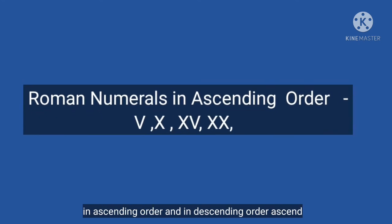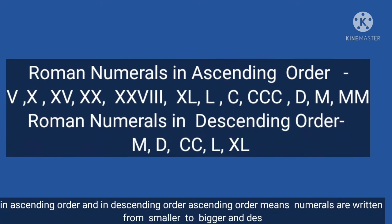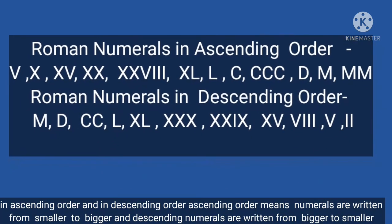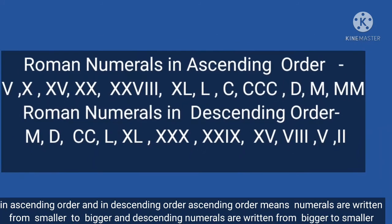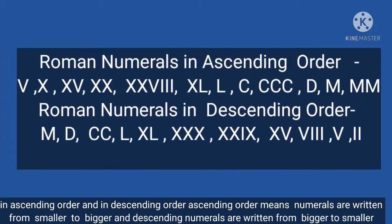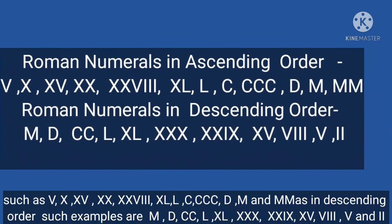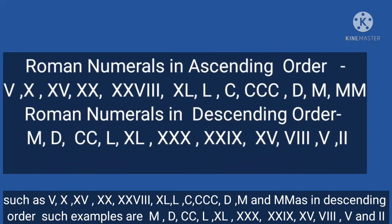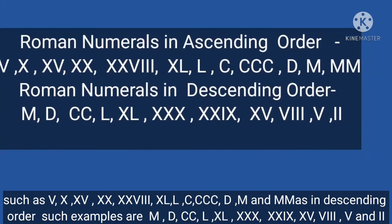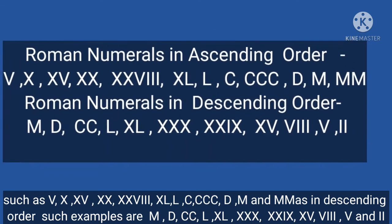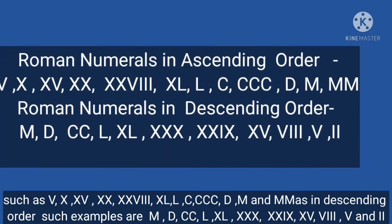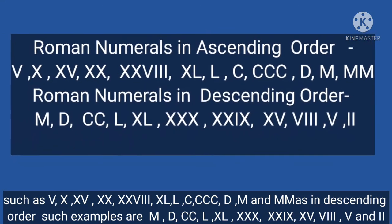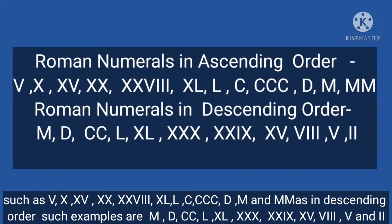Now everyone learn how to write Roman numerals in ascending order and in descending order. Ascending order means numerals are written from smaller to bigger, and descending order means numerals are written from bigger to smaller. Examples in ascending order: V=5, X=10, XV=15, XX=20, XXXV=35, XXVIII=28, XL=40, L=50, C=100, CCC=300, D=500, M=1000, MM=2000.